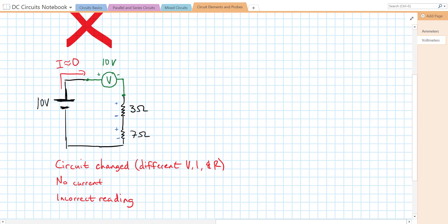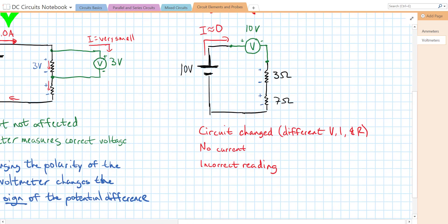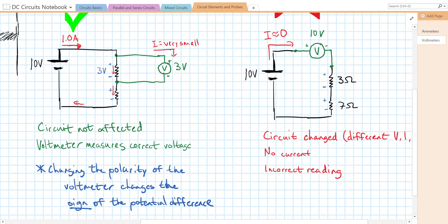One final note. You notice on my voltmeters, I've labeled a positive and a minus sign. That's to indicate the polarity of the voltmeter. If you reverse the polarity, the magnitude of the voltage won't change, but the sign of the potential difference, the sign of the voltage, will reverse.